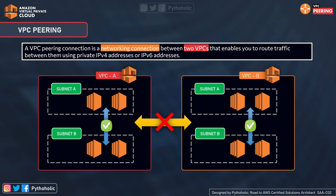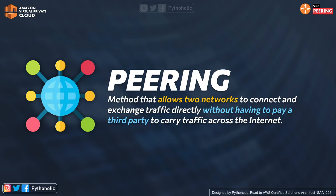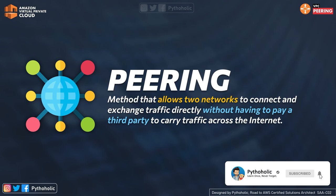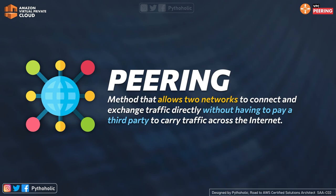Without VPC peering, we would either need public internet access, VPN connections, or internet gateways to achieve cross-VPC communication. But what if we don't want to use these things? We need something simpler. Peering is a method that allows two networks to connect and exchange traffic directly without having to pay a third party to carry traffic across the internet. AWS provides this peering connection so we can connect to another VPC and access the resources we need, though we need to understand what makes up a VPC peering connection.